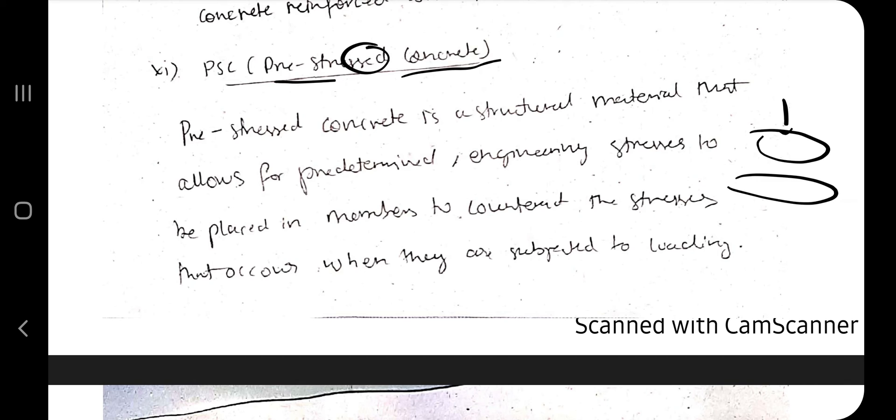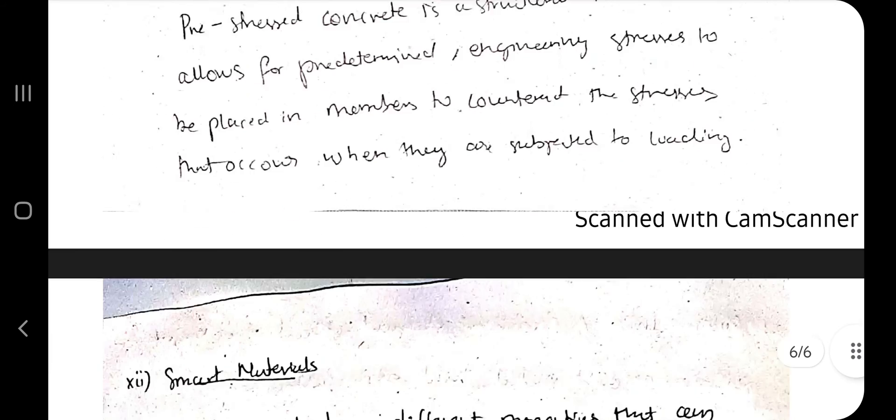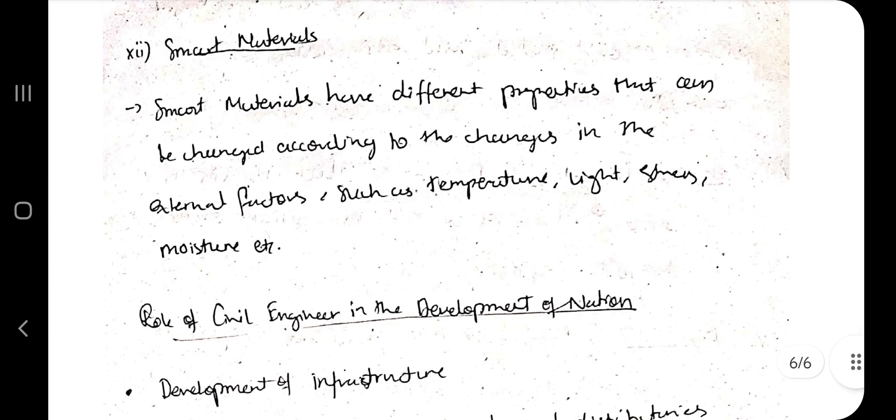Pre-stressed concrete (PSC): when we apply load, stress develops on the surface. To avoid this stress, another material is used - pre-stressed concrete, where low stress is applied beforehand. Smart materials have different properties that can be changed according to changing conditions.